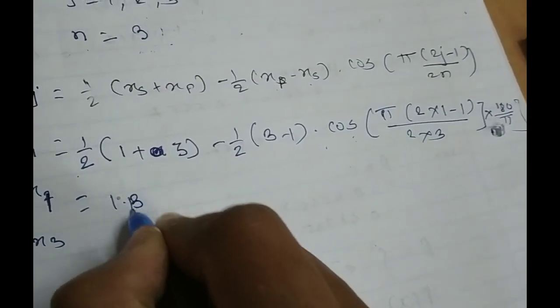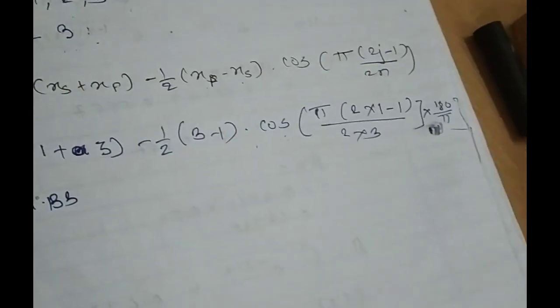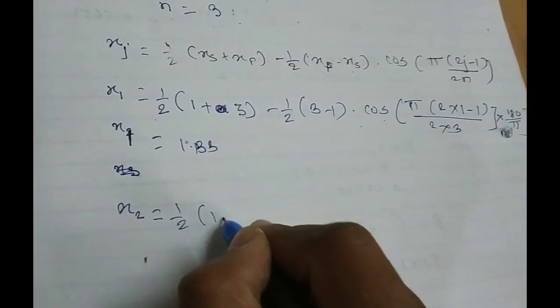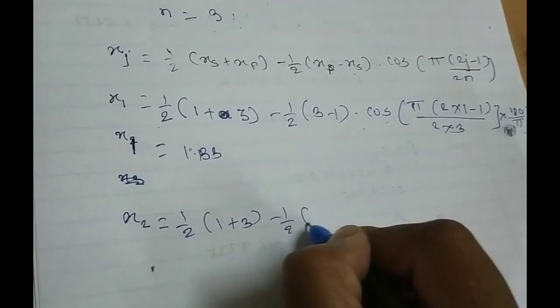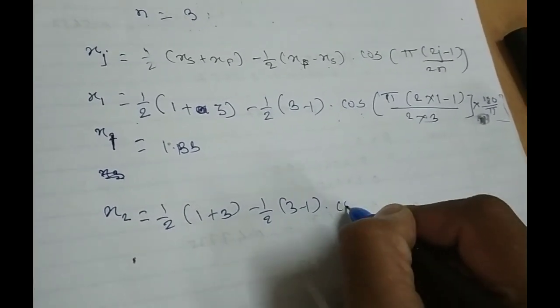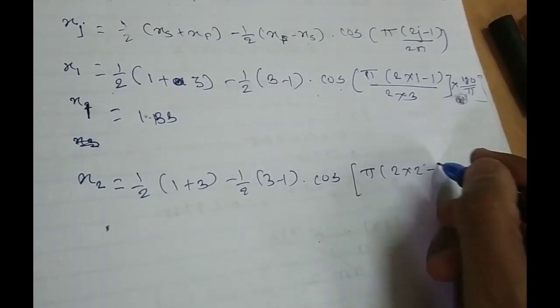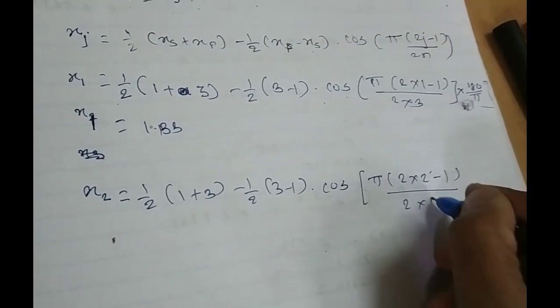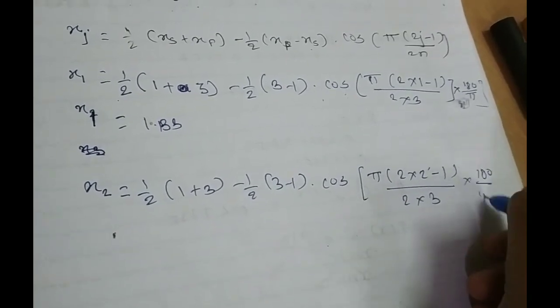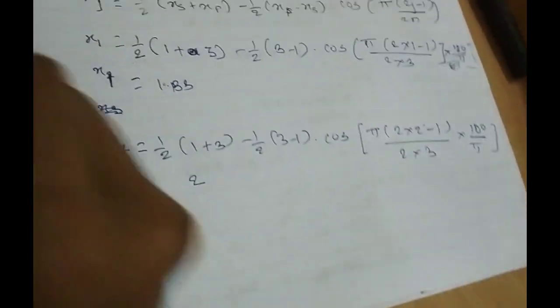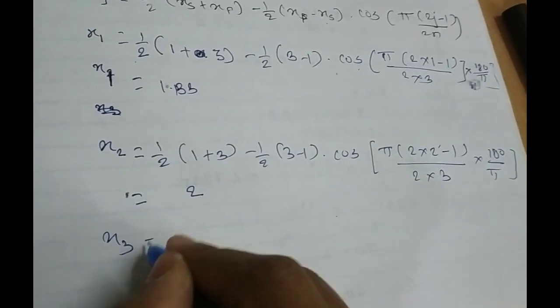Now let me write for x2. So again it is 1/2(1 plus 3) minus 1/2(3 minus 1) into only this term will be changed by 2 into 2, that is j is 2 now, minus 1 divided by 2 into 3 into 180 by pi bracket close and the answer is 2. We'll just use the calculator similarly for x3.